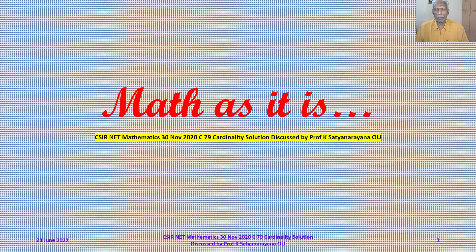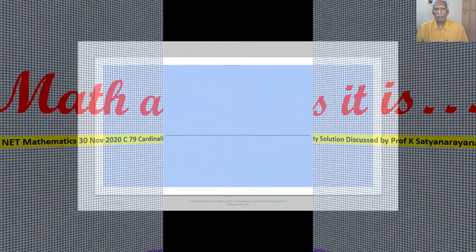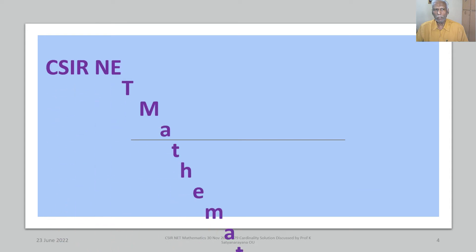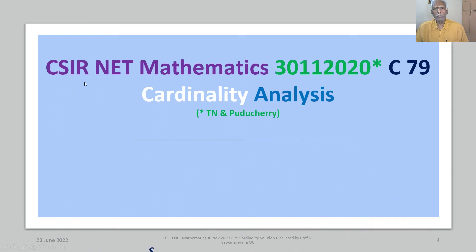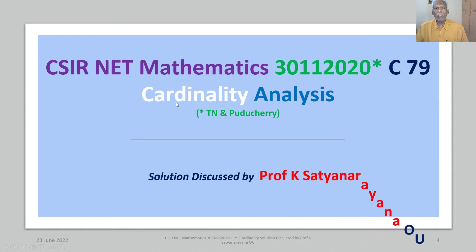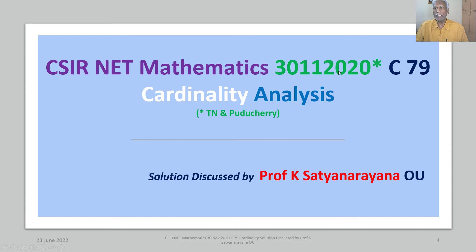We now discuss the solution of a problem from the section Analysis. The problem is on the cardinality of a given set. This problem appeared in the CSIR National Eligibility Test held on 30 November 2020, and it is from section C.